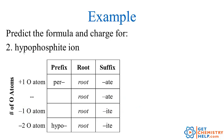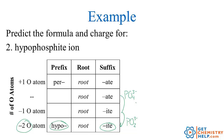How about hypophosphite? Phosphorus is in that center box so it has four oxygens, and it's three columns over from the right so it's three negative. We're all the way down at hypo-, so that means we've lost two oxygens. So hypophosphite: PO4 becomes PO2, but still three negative. The charge doesn't change, only the number of oxygens changes.